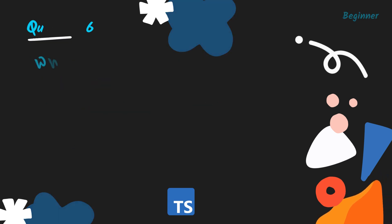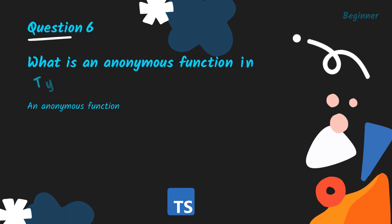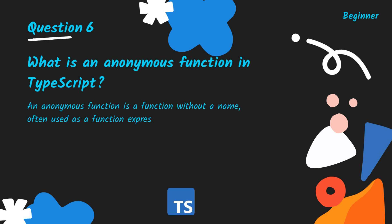What is an anonymous function in TypeScript? An anonymous function is a function without a name, often used as a function expression or argument to other functions.